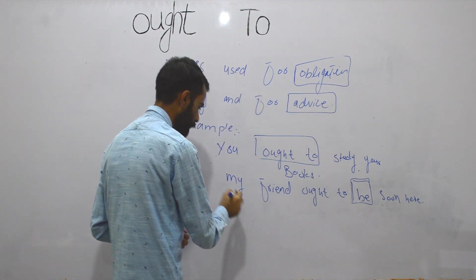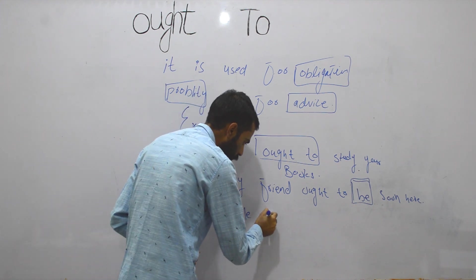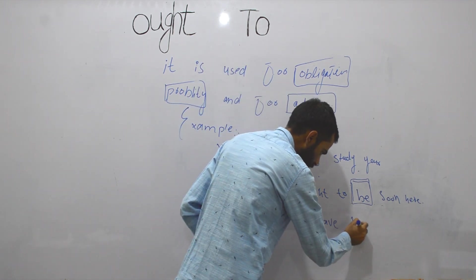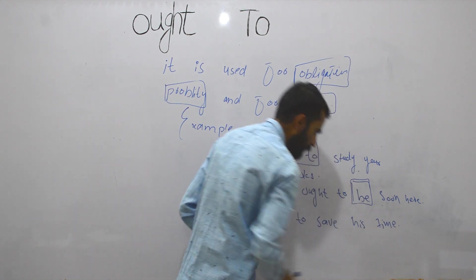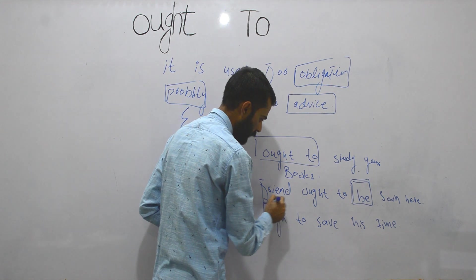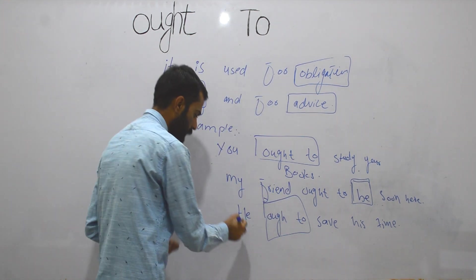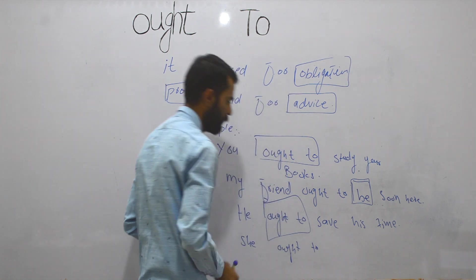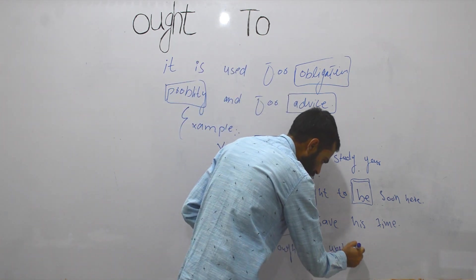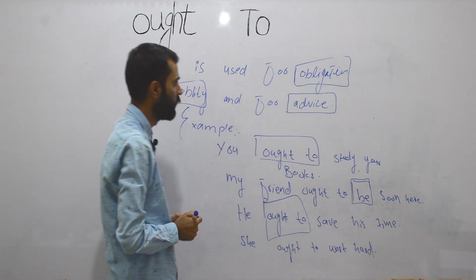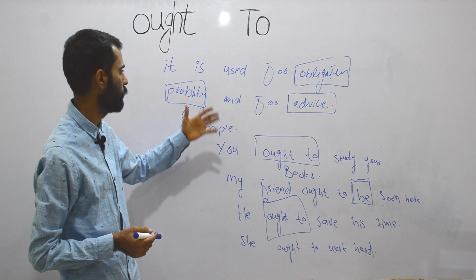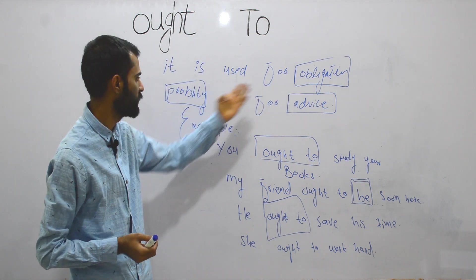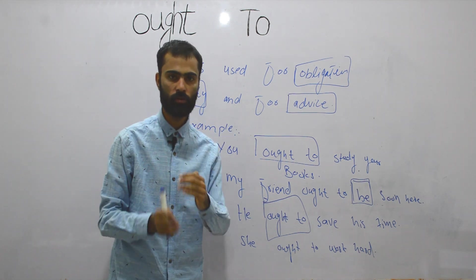For advice — when you are advising someone, you use 'ought to'. For example: 'He ought to save his time' and 'She ought to work hard.' So 'ought to' is used for obligation, probability, and advice. I made examples for all three uses.